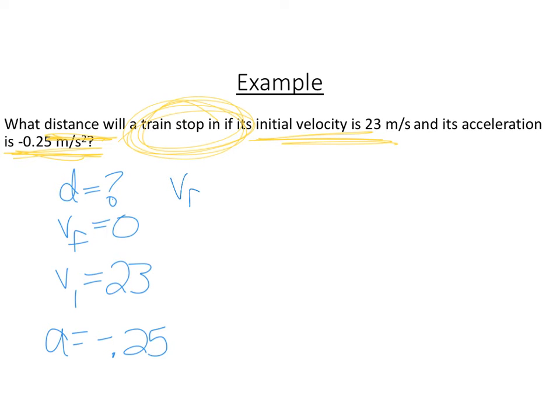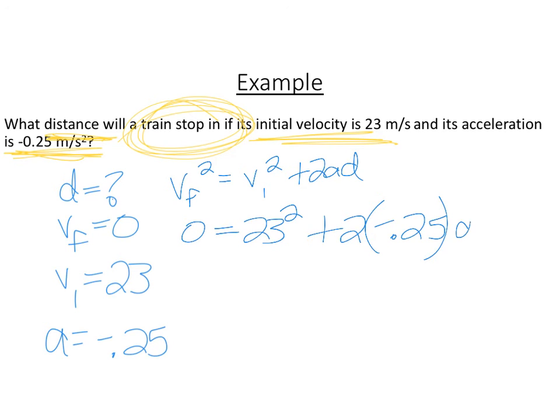Now that we've found our equation, I'm going to jot it right here. V final squared equals V initial squared plus 2ad. So V final is 0, 0 squared is 0. The initial is 23, we've got to square that. And then 2 times a is negative 0.25, and d is what we're looking for here. Now we perform some math. So 23 squared gives us 529.